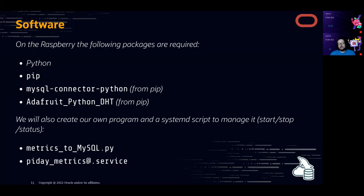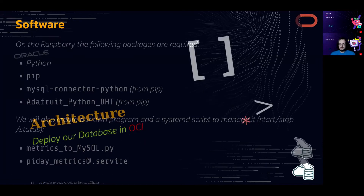We also need to create some software ourselves — our own program to manage everything: start, stop, and get status. I'll use systemd and name it pyday_metrics@.service. The software that collects data and sends it to MySQL is called metrics_to_mysql.py. All source code for these examples is also on GitHub — the link will be at the end of the slides.